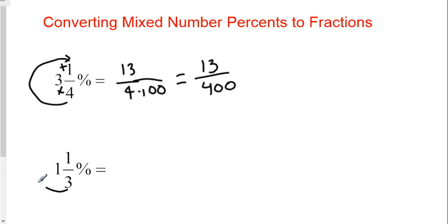Let's try it again with this one. 1 times plus it. You get 3 times 1 is 3 plus 1 is 4. You get 4 over 3. And the bottom is going to be multiplied by 100.